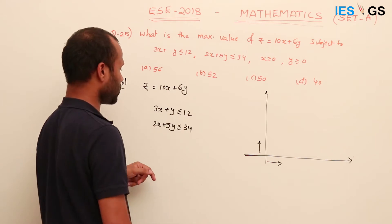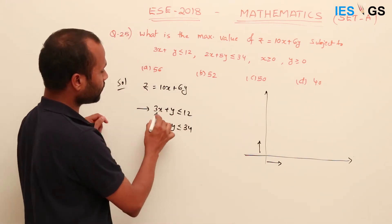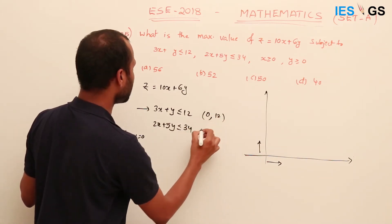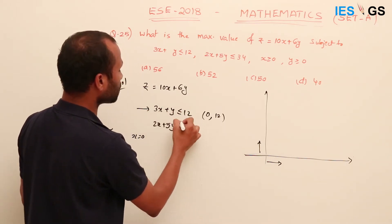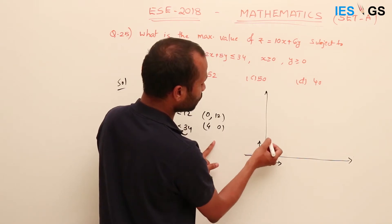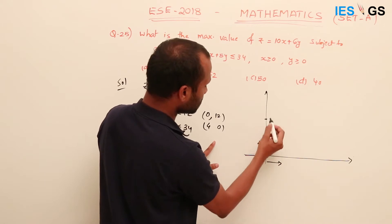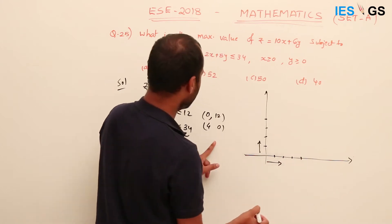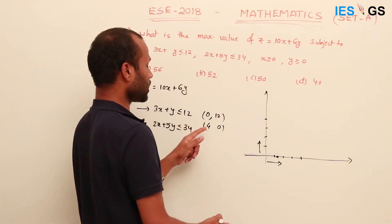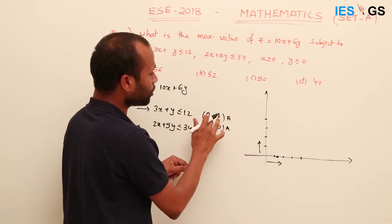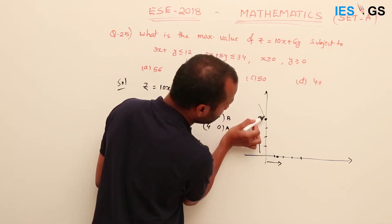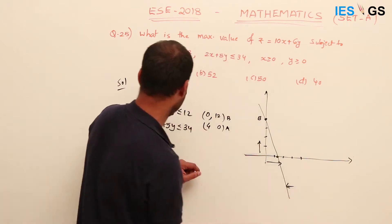Now plot these two lines roughly. For the first line, put x = 0, then y = 12, so one point is (0, 12). The other point: put y = 0, then x = 12/3 = 4, so the point is (4, 0). So two points are (4, 0) and (0, 12). Point A is (4, 0) and point B is (0, 12).